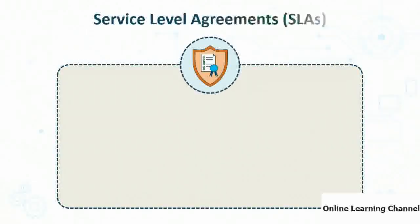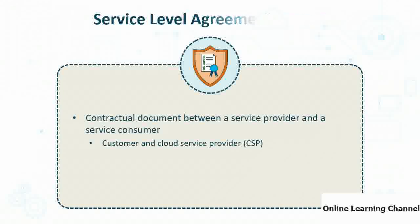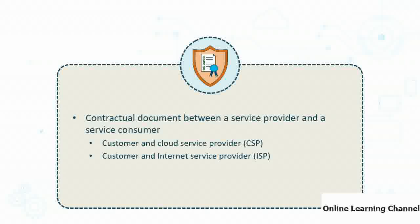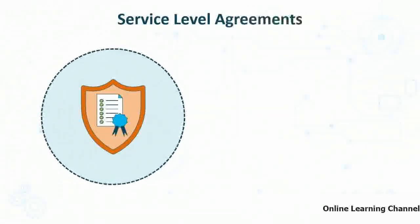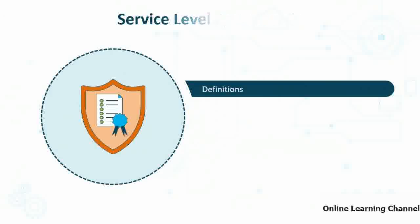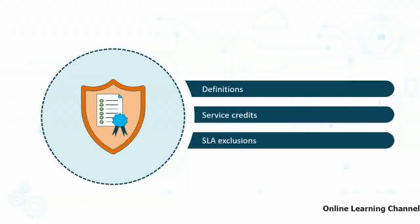The next thing to consider in the cloud are service level agreements, or SLAs. An SLA is a contractual document between a service provider and a service consumer — not specific to the cloud but certainly applicable. It can be between a customer and a cloud service provider, an internet service provider, or even between internal departments for chargeback. In Microsoft Azure, each cloud service offering has its own unique SLA, consisting of a definition of the service covered, service credits and allocation, and SLA exclusions.